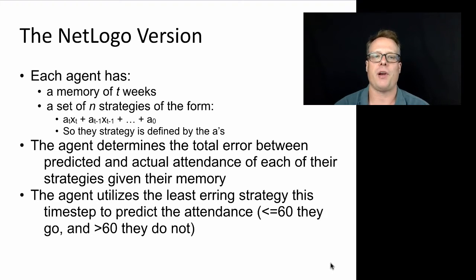In Brian Arthur's original paper, he makes this offhanded remark at the end that he expects the results of his model to be very similar if the agents were using a machine learning algorithm, such as a genetic algorithm, to control the heuristics they were using to predict the attendance of each week.